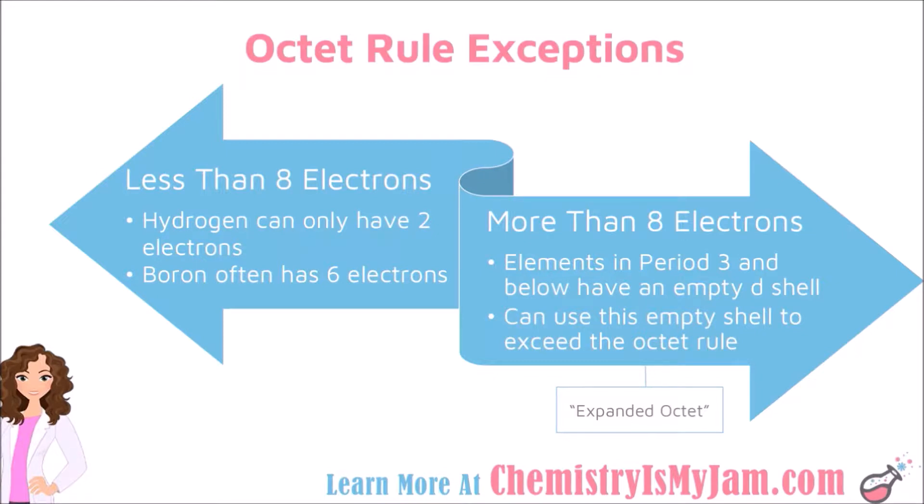Common examples of atoms that have less than 8 electrons are hydrogen and boron. Hydrogen is an extremely small atom. It only has one energy level and it can only handle having two electrons. So you will find hydrogen with one single bond and no more. That is an exception to the octet rule.